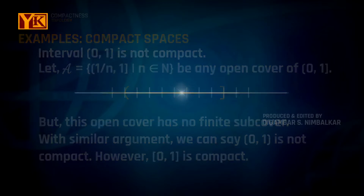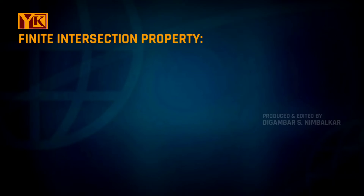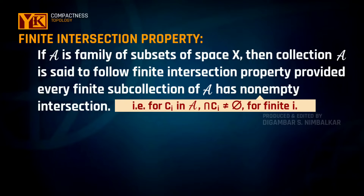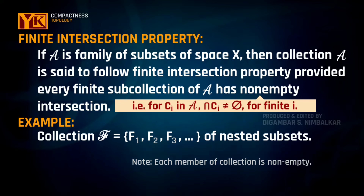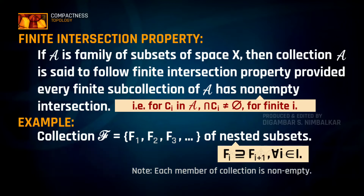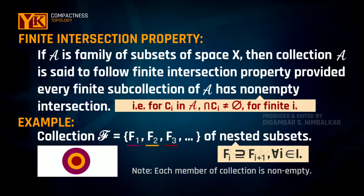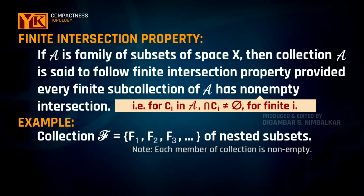For now, we will proceed to theorems. Before we see the theorem, we look at a property named the Finite Intersection Property. If we have a family of subsets of a space X, then this collection will have the finite intersection property if every finite sub-collection of the family has non-empty intersection. For example, if you consider a nested family of subsets F1, F2, F3, ... such that F(i+1) is contained inside F(i), then this is an example of a collection having the finite intersection property.